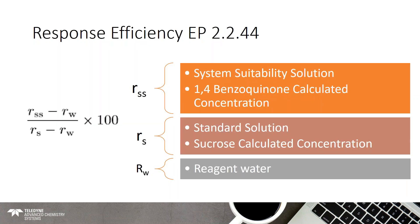Here is the formula given in EP 2.244. Basically, you take your system suitability solution — the difficult-to-oxidize 1,4-benzoquinone — subtract out your reagent water, then do the same with your sucrose solution: the calculated response of sucrose minus the calculated response of reagent water, then multiply by 100 to make it a percentage.